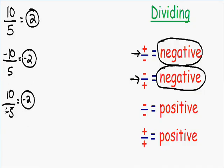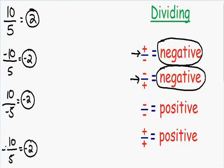Sometimes the negative sign is not on the top or the bottom — sometimes the negative sign is right in the middle. Let's say we had negative ten over five with the negative sign in the middle; this causes some confusion for some students. But you can look at this the same way as the previous two examples. You could take this negative sign and place it in front of the ten or in front of the five — either way you have one positive and one negative, and the answer is going to be negative two.